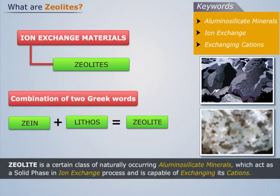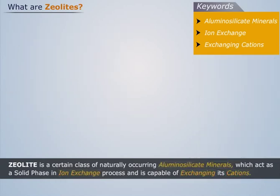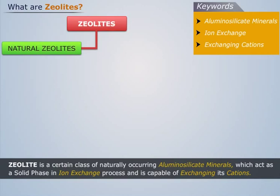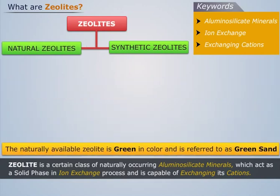Thus, zeolite is a certain class of naturally occurring aluminosilicate minerals, which act as a solid phase in the ion exchange process, and is capable of exchanging its cations. Zeolites are classified as natural zeolites and synthetic zeolites. The naturally available zeolite is green in color and is referred to as green sand. One of the most common natural zeolites is thomsonite.